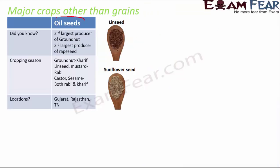Oil seeds are also very important since we use oil for cooking everything. India is the second largest producer of groundnut and third largest producer of rapeseed. There are many varieties of oil seeds: groundnut, mustard, coconut, til, soybean, linseed, and sunflower seeds — all are examples of oil seeds used as cooking medium.